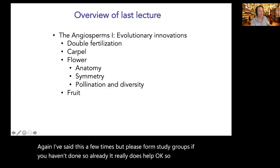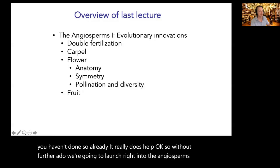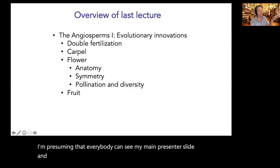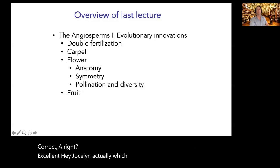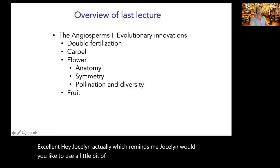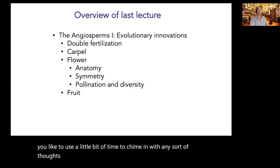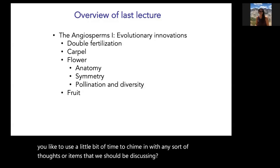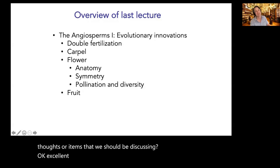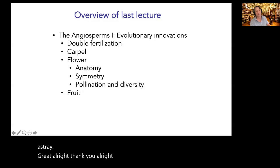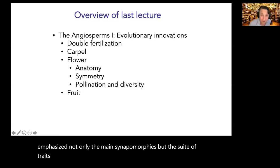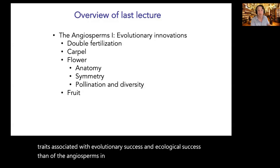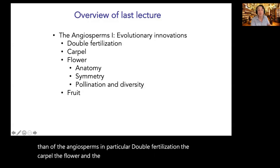Without further ado, we're going to launch right into the angiosperms. As an overview of last lecture, we emphasized not only the main synapomorphy but the suite of traits associated with the evolutionary and ecological success of the angiosperms — in particular double fertilization, the carpel, the flower, and the fruit. We focused on flower anatomy, flower symmetry, and parts of the flower including the perianth and corolla.